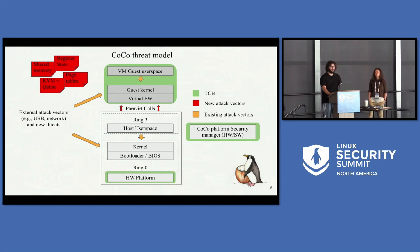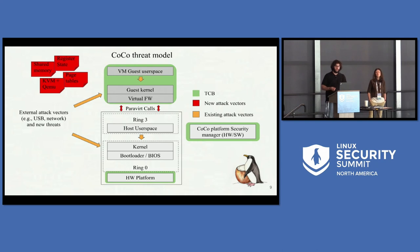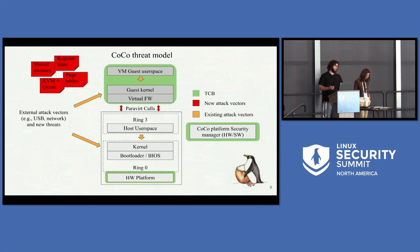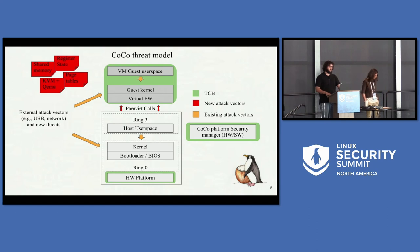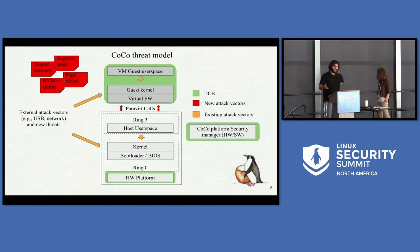How does this change with the confidential computing threat model? Two main differences: one, there's much less that we trust — a smaller attack surface, which is good. The other major difference is that we have COCO — a platform security manager. You can think of it as Intel TDX or AMD Secure Processor with SBSM. It's a root of trust that allows us to reduce the TCB significantly. But at the same time, there are new attack vectors — all the constructs the guest kernel interacts with, like shared memory, page tables, all sorts of inputs, even interrupts — all of that becomes untrusted.